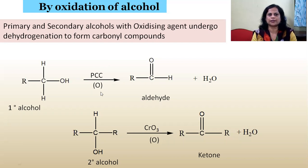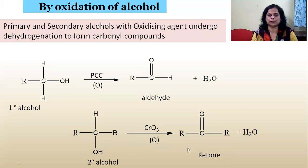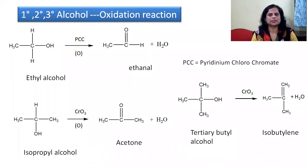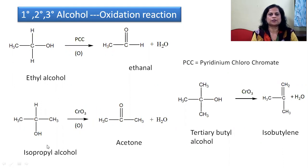The general reaction for primary alcohol with PCC shows oxidation by removal of H2, forming aldehydes. For secondary alcohols, CrO3 is used, showing oxidation by removal of H2O to form ketones. For example, ethyl alcohol (ethanol) in the presence of PCC undergoes oxidation — removal of H2O and addition of oxygen — giving ethanal. For secondary alcohols, CrO3 is required and a similar type of reaction gives acetone.